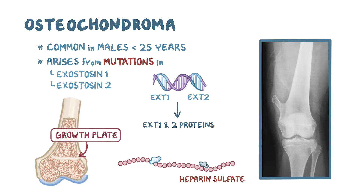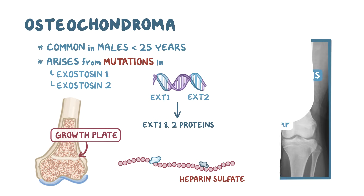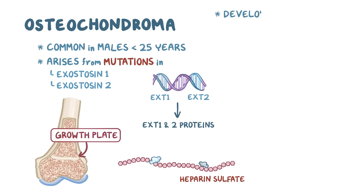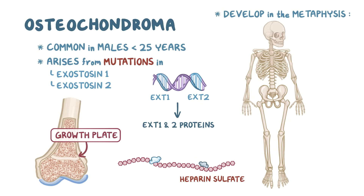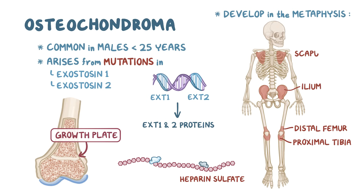In osteochondroma, a tumor arises from the growth plate and typically results in a lateral bony projection. This bony stalk is called an exostosis, and it has a cap made mostly of hyaline cartilage. Osteochondromas typically develop in the metaphysis of long bones, most commonly the distal femur and the proximal tibia around the knee joint, but they can also occur in flat bones like the ileum and the scapula.